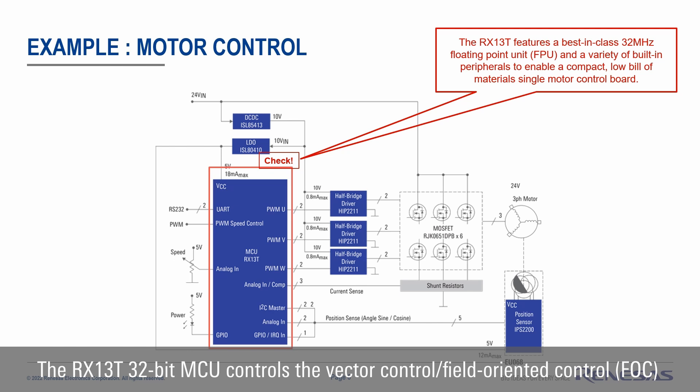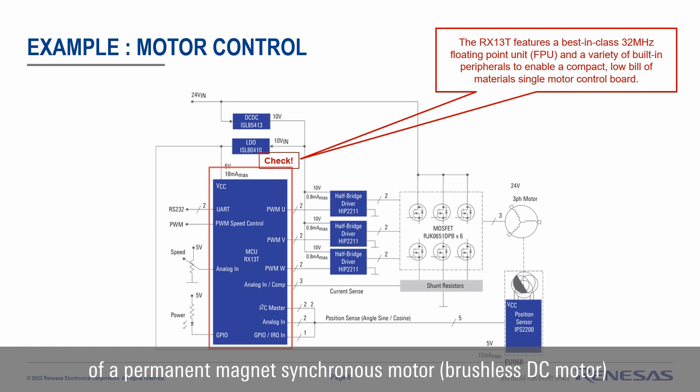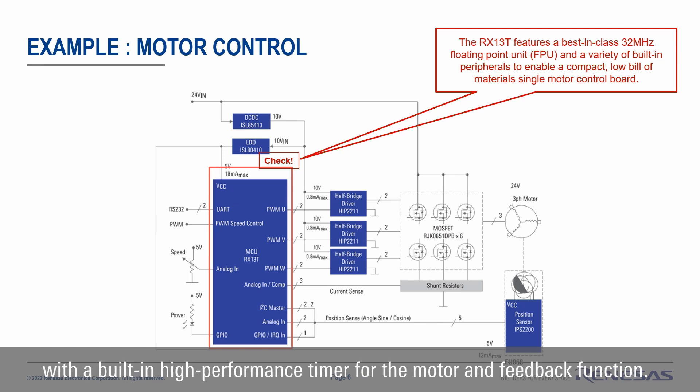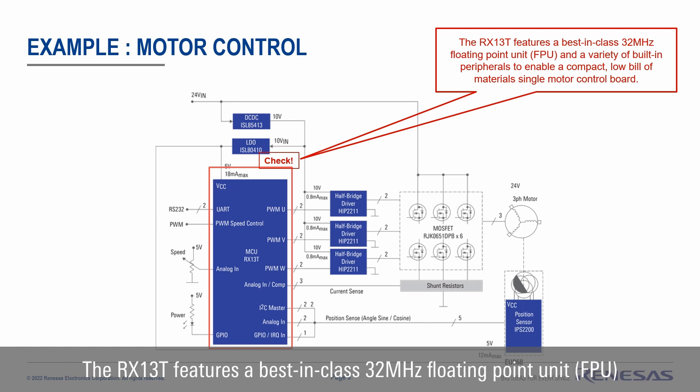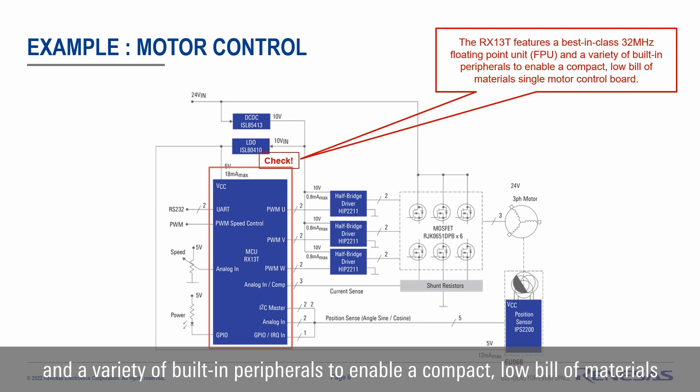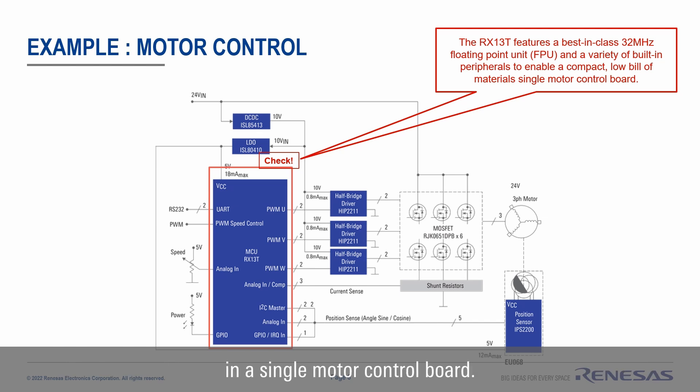The RX13T 32-bit MCU controls vector control and field-oriented control (FOC) of a permanent magnet synchronous motor and brushless DC motor, with a built-in high-performance timer for the motor and 3-shunt function. The RX13T features a best-in-class 32MHz floating-point unit (FPU) and a variety of built-in peripherals to enable a compact, low bill-of-materials single motor control board.